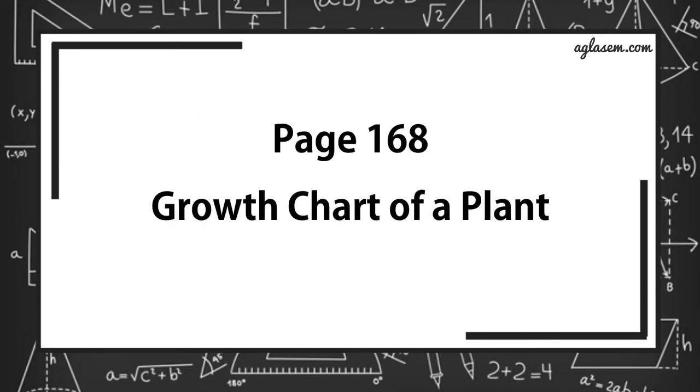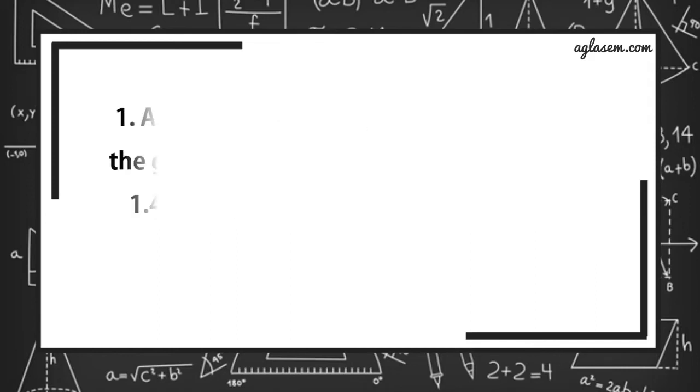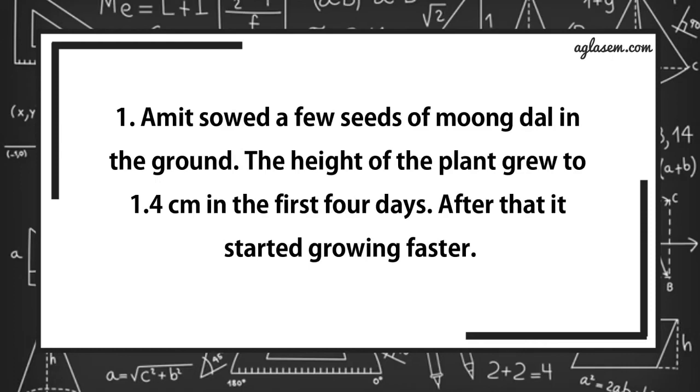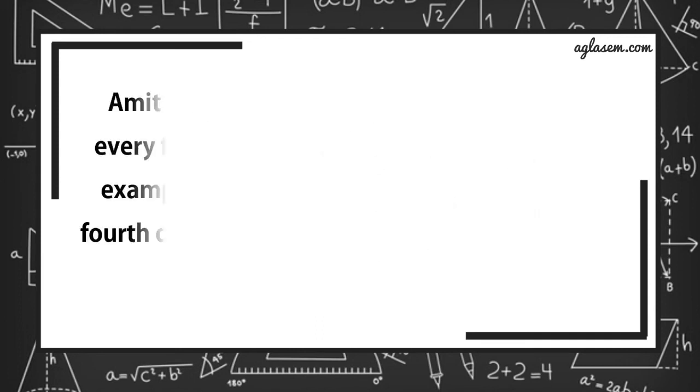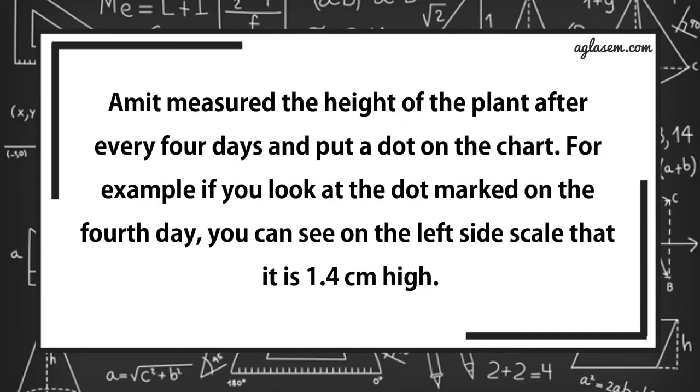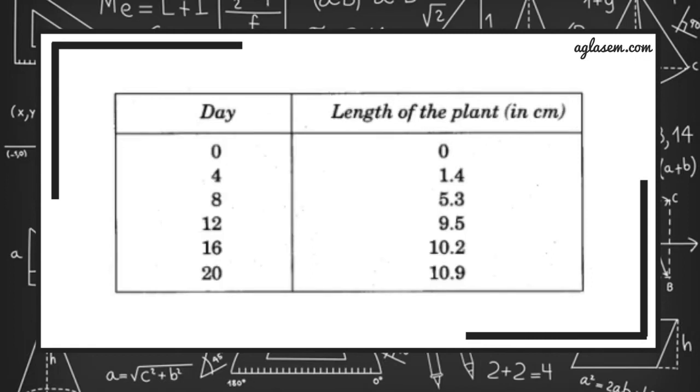Now, turn to page number 168. Growth chart of a plant. Question number 1 says, Amit sowed a few seeds of moong dal in the ground. The height of the plant grew to 1.4 cm in the first 4 days. After that, it started growing faster. Amit measured the height of a plant after every 4 days and put a dot on the chart. There is a chart divided into two parts. First, day, and second part is length of the plant. Day 0, there was no plant. Day 4, the plant height was 1.4 cm. On 8th day, 5.3 cm. On 12th day, 9.5 cm. On 16th day, 10.2 cm. On 20th day, 10.9 cm.